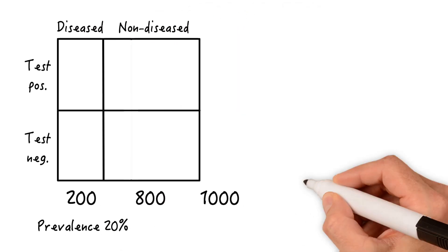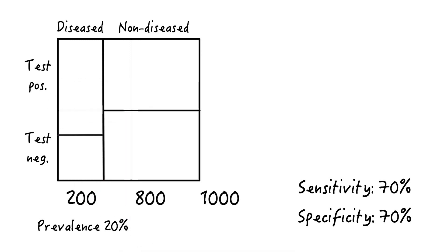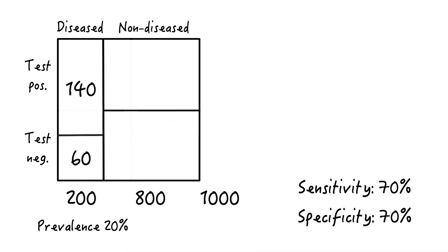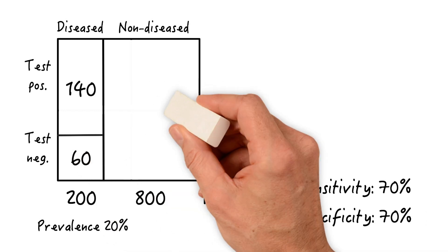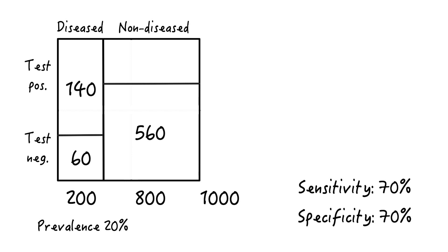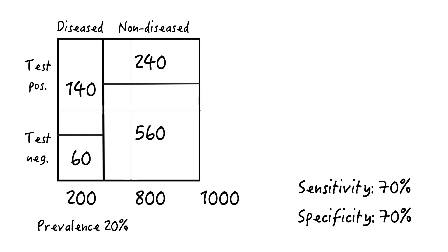Let's say the test sensitivity is 70%, and the specificity is also 70%. So out of the 200 diseased, 70% or 140 will be picked up by the test, whereas 60 will be missed. Similarly, 70% or 560 of non-diseased will be picked up, whereas 240 will be falsely classified as diseased.